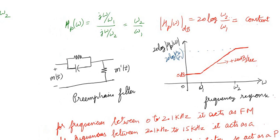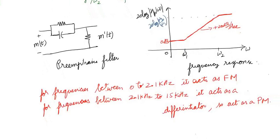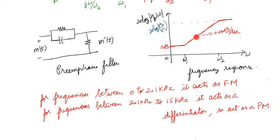This is the pre-emphasis circuit. The input is the message signal m(t), and the output m'(t) is passed through the modulator. The important point: between ω₁ and ω₂ the increasing slope means the filter is acting as a differentiator. For frequencies below ω₁ (0 to 2.1 kHz) it acts as FM, and between 2.1 kHz and 30 kHz it acts as a differentiator, which corresponds to phase modulation. So we achieve our objective: FM behavior at low frequencies and PM behavior at high frequencies.